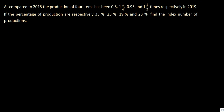Our next and last sum: as compared to 2015, the production of 4 items has been 0.5 times, 1 and 1/4 times, 0.95 times, and 1 and 1/2 times respectively in 2019. The percentage of production are respectively 33, 25, 19, and 23. Find the index number of production.